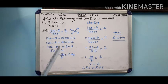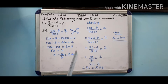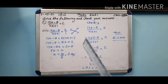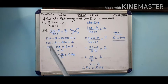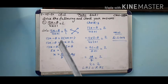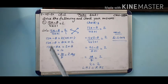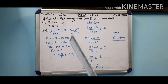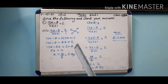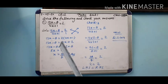Ab in numbers ko hum transpose karenge. Dekho, x waale numbers ek taraf karenge aur bina x waale numbers ek taraf. Toh 13x upar se neeche utar jaayega. Ab yeh plus ka 8x hai — jab hum ise left side mein leke jaayenge toh iska sign change ho jaayega, ho jaayega minus ka 8x, is equal to. Ab 2 upar se neeche as it is likh diya, koi sign change nahi hoga. Ab minus ka 8 idhar laana hai — yahan aakar yeh plus ka ho jaayega. Toh 2 plus 8. 13 mein se 8 jaayenge, 5 bachenge.